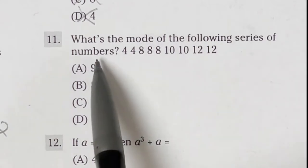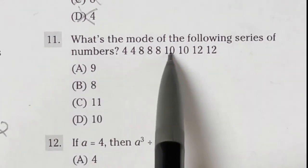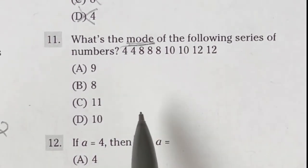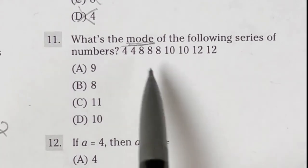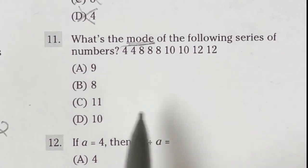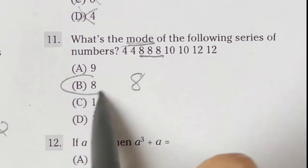What's the mode of the following series of numbers is number 11 on the ASVAB. It says 4, 4, 8, 8, 8, 10, 10, 12, 12. Now remember the mode is one of our three measures of center, probably the worst since it can be anywhere in your thing, but mode just means it's the number that appears the most. In this case, the number that appears the most is 8, because there's three of them, which means our answer is B.